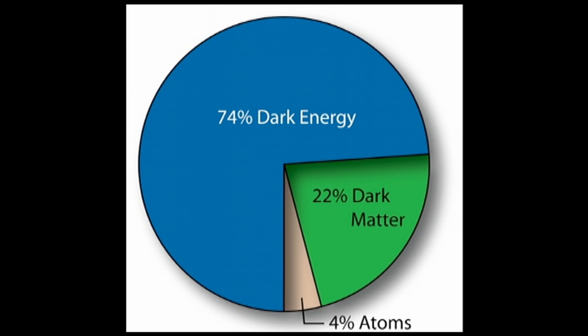We can explain this by introducing a new form of energy, and we called it dark energy. It turns out that most of the stuff in the universe is made out of dark energy. Dark energy is pushing the universe, and is therefore counteracting the gravitational pull. However, we have no idea what dark energy actually is. We just have to put it in there, otherwise we don't understand our measurements.